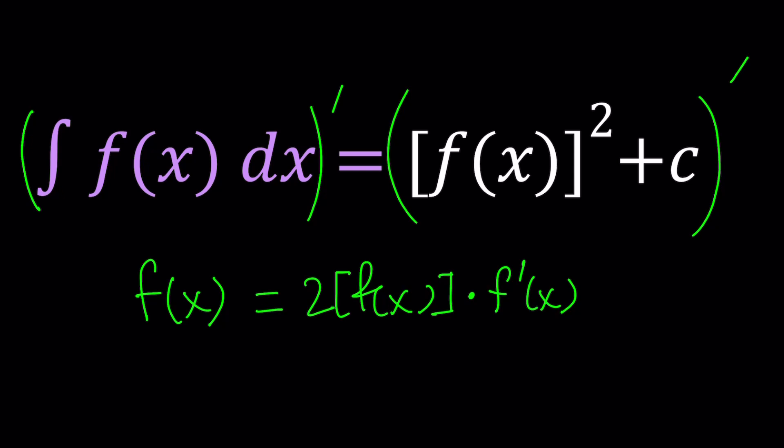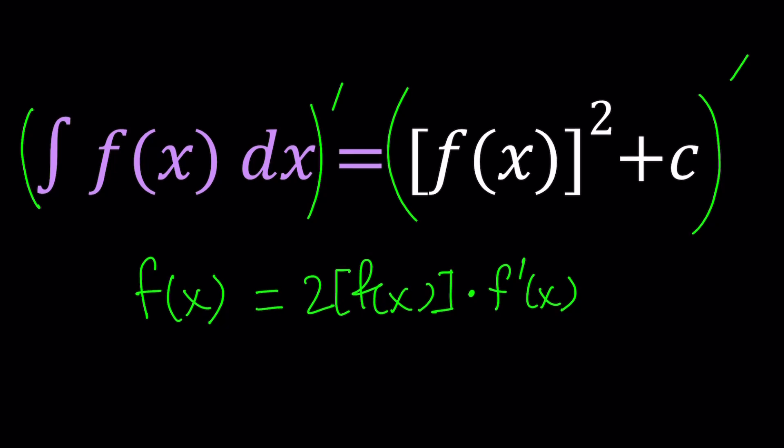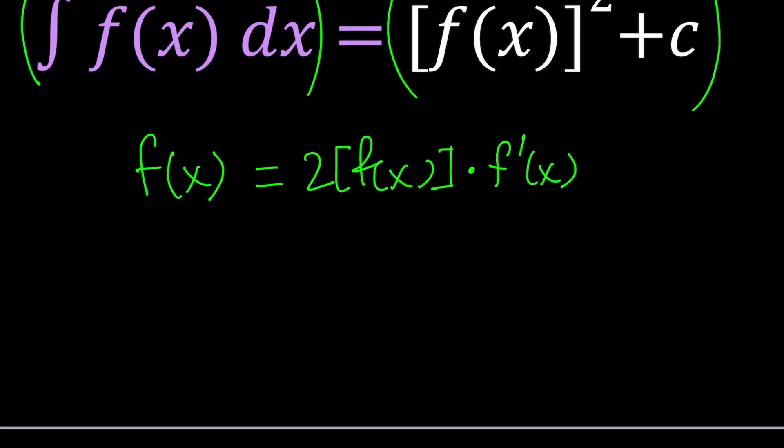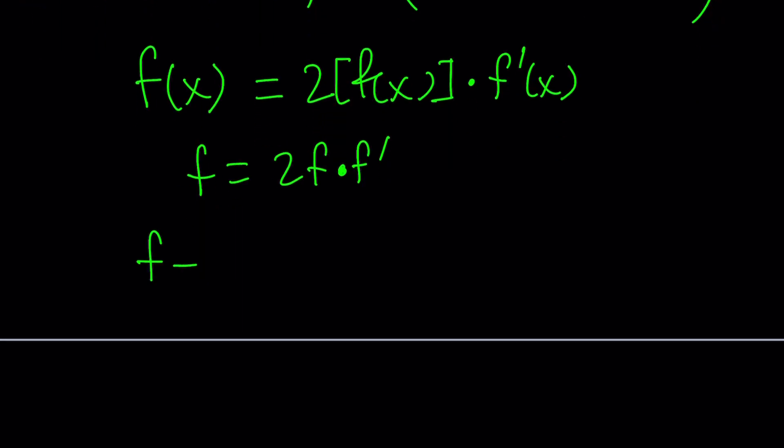At the end, we'll see if c made any difference. Now we've got this type of equation. What am I going to do with this? To make it easier, you can write it like this: f equals 2f times f prime. I'll put everything on the same side: f minus 2f f prime equals zero.